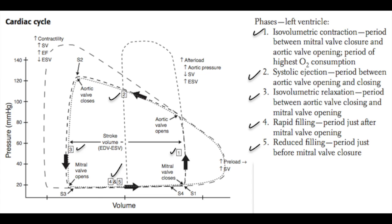If you increase afterload — for example by increasing aortic pressure — the heart has to work harder and generate a higher pressure during phase one, or isovolumetric contraction. Because the heart is using more energy to overcome afterload, you see a drop in stroke volume and an increase in end systolic volume. When contractility increases, phase three is shifted to the left, represented by a decrease in end systolic volume and therefore an increase in stroke volume and ejection fraction.